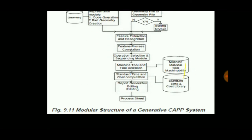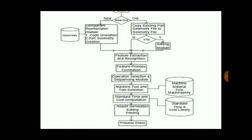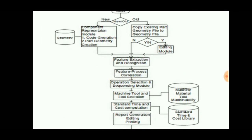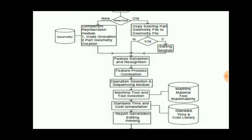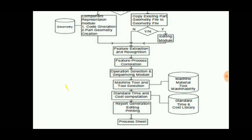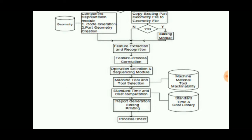The flowchart of generative computer process planning starts, then searches for an existing file, followed by code generation, part geometry, and the editing module. Extraction of the plan module follows — if already available, then process correlation, selection and sequencing module, machine tool and tool selection, standard time and cost estimation. If any errors are present, the editing process is repeated, and finally a process sheet is obtained.